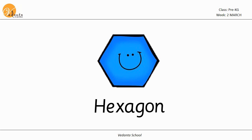How do we spell the word hexagon? H-E-X-A-G-O-N. Hexagon. Can you say it with me kids? H-E-X-A-G-O-N. Hexagon. Now, let's listen to a song about the hexagon.